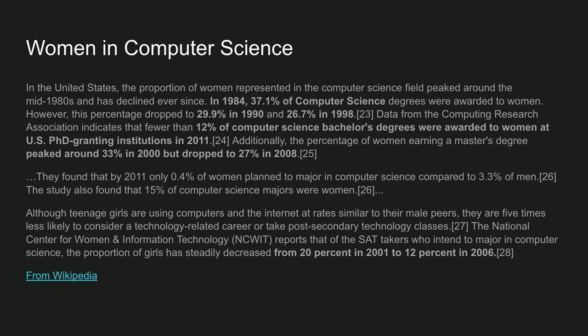By 1990 that had dropped to 29%, to 26.5% in 1998, and by 2011 that number had dropped to 12% of bachelor's degrees awarded to women in the United States. By 2011, only 0.04% of women planned to major in computer science, compared to 3.3% of men. The study also found that 15% of computer science majors were women — though there are a couple of different studies here.